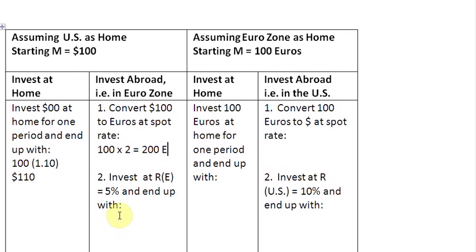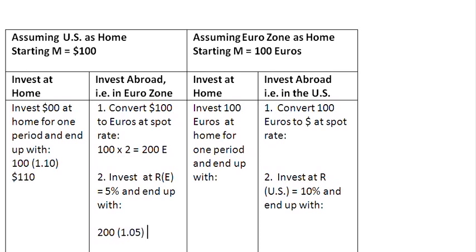What are we going to do with these 200 euros? We are going to invest these euros at the rate of interest in the Eurozone, which is 5%. So 200 euros invested at the rate of 5% are going to give us, at the end of one period, 210 euros.